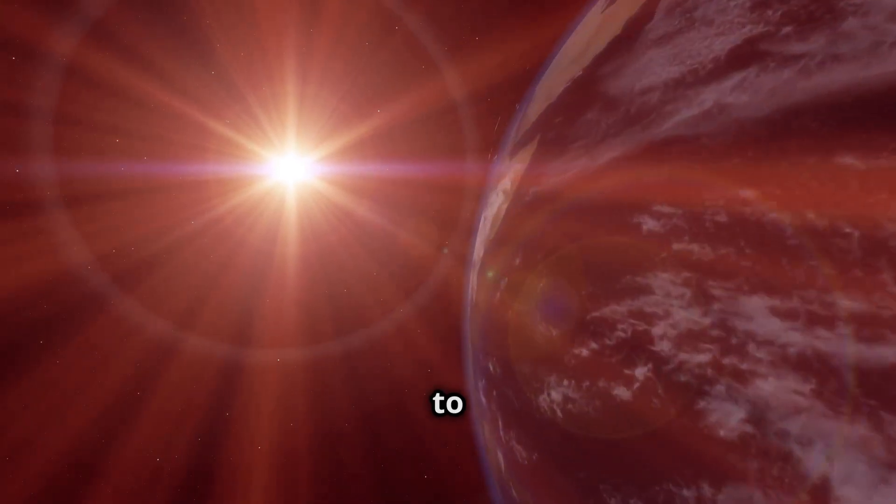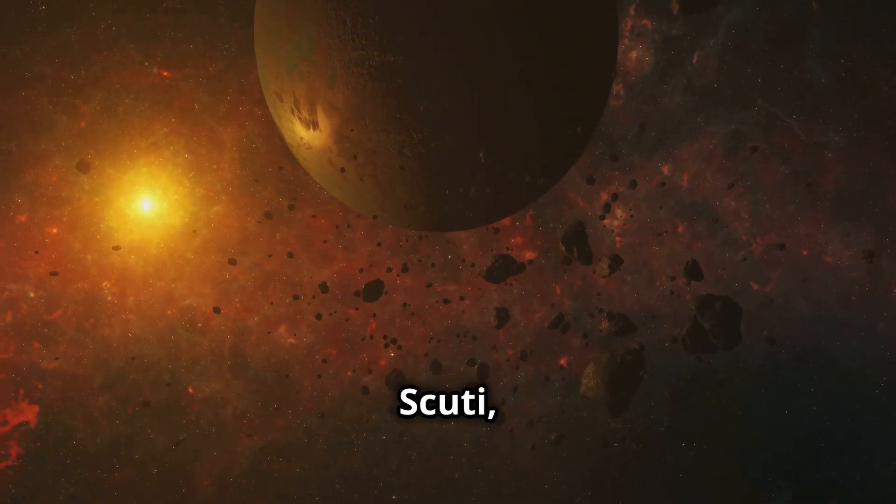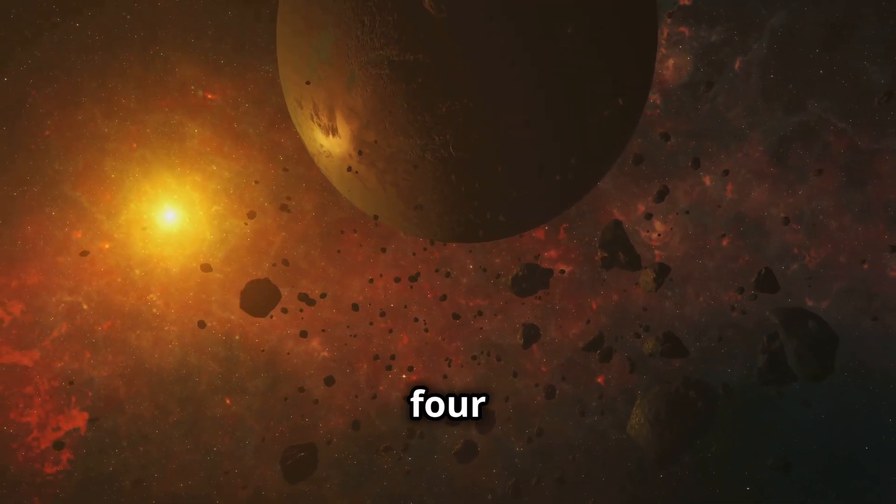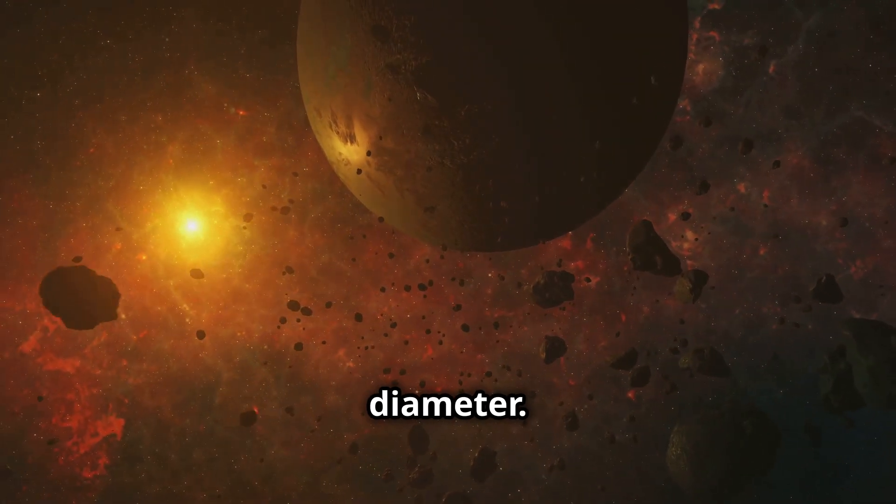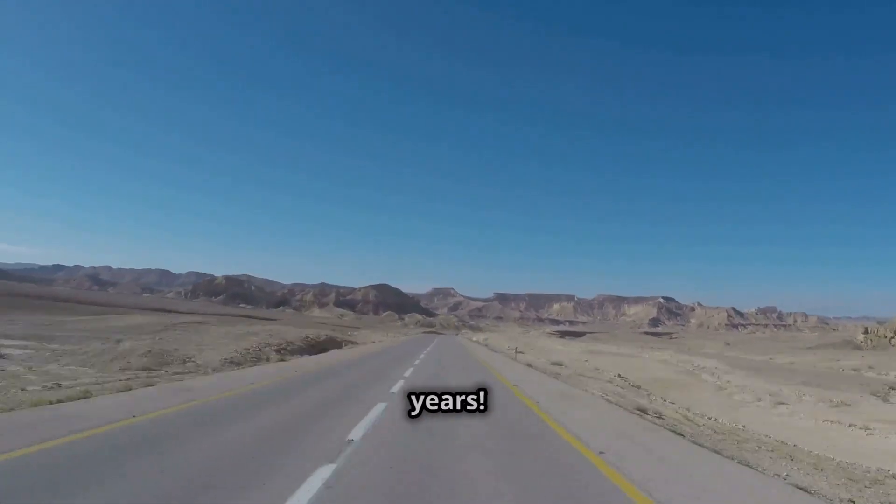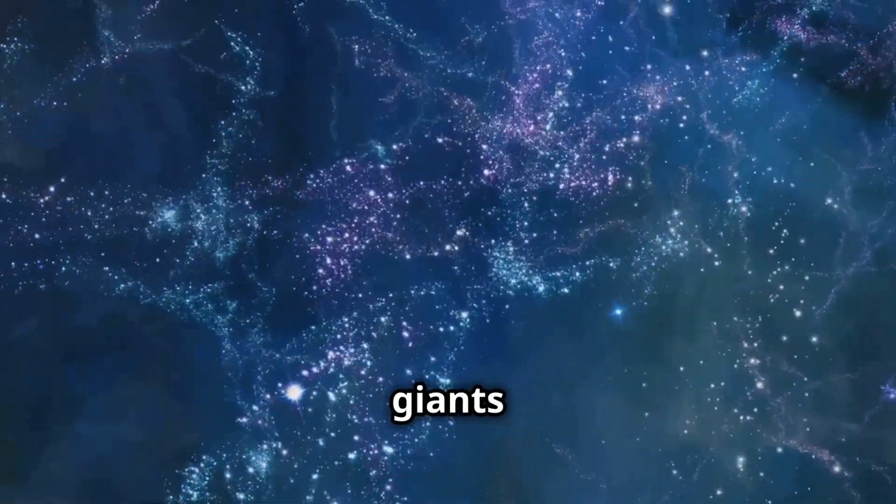Next, we zoom out to our cosmic neighborhood, the solar system. While dwarfed by UY Scuti, it's still a vast expanse stretching over 287.46 billion kilometers in diameter. That's the equivalent of driving a car at highway speed for over 3,000 years, but even this incredible distance pales in comparison to the cosmic giants that await us.